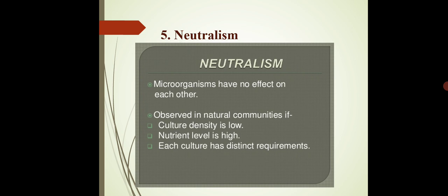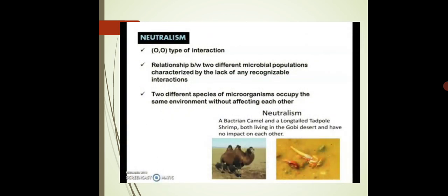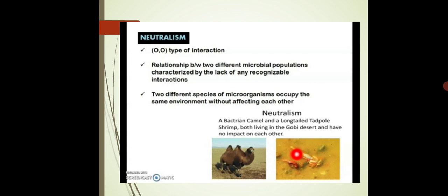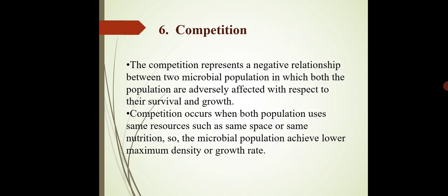The next type of microbial interaction is neutralism. Neutralism means there is no effect on either partner — a neutral effect. It is characterized by the lack of any interaction between two different microbial populations. For example, the Bactrian camel and the long-tail tadpole shrimp, both living in the Gobi Desert, have no impact on each other — no positive type, no negative type. That is neutralism.